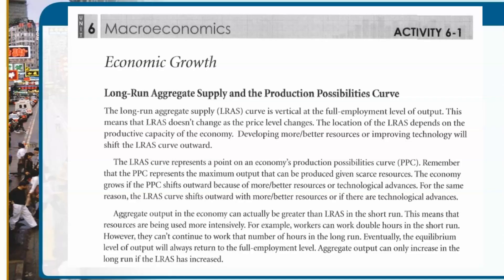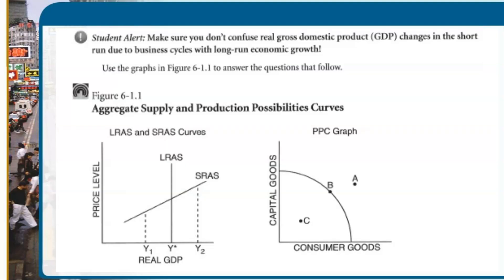We start by looking at Activity 6-1, some review of long-run aggregate supply and the PPC. The idea of long-run aggregate supply — this LRAS curve — is really a microcosm of the small portion where we see consumer goods. That essentially is the start of the long-run aggregate supply that creates the PPC, or production possibilities frontier. By looking at LRAS as part of that PPC, we can see that when we shift the long-run aggregate supply outward or rightward, we are growing the PPC.